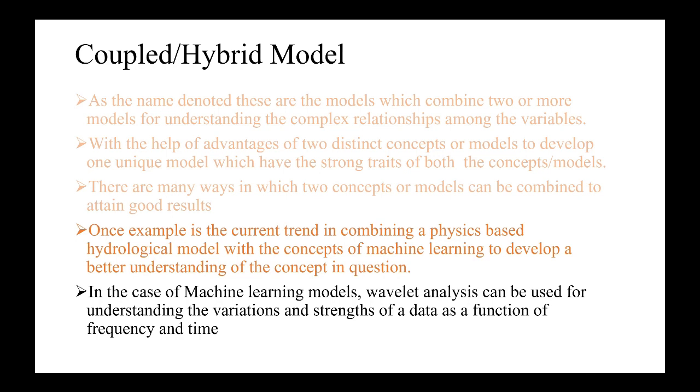Some of the methods which are used in our domain are combining a physics-based model and a machine learning model, so that the accuracy of a physics-based model in terms of understanding the relationship of various variables and the faster performance of a machine learning model is combined to develop a hybrid model which has both advantages. This is one of the main topics of research going on nowadays in this domain.